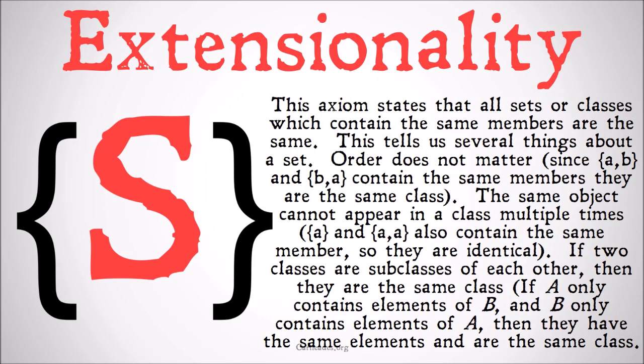This axiom states that all sets or classes which contain the same members are the same. This tells us several things about a set. If two different sets contain the same members, then there aren't really two different sets there — there's only one set. If two different classes each have all the same members, there aren't really two different classes there. It's just one class.